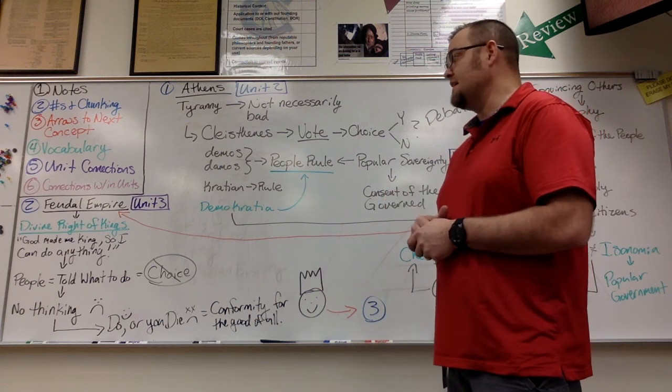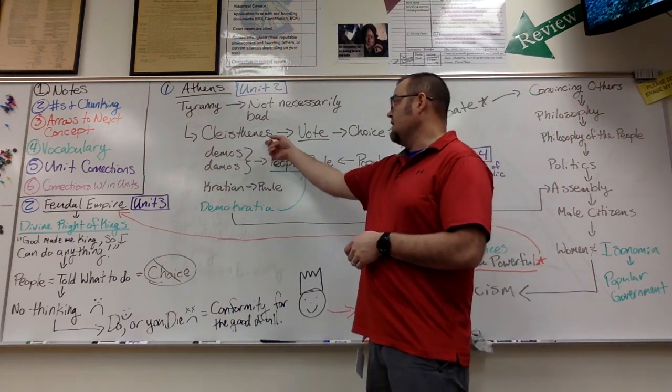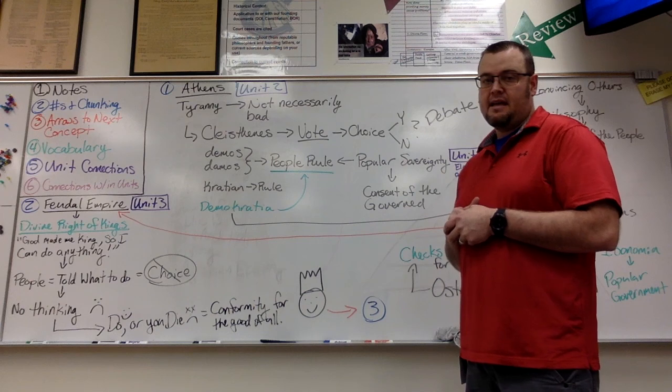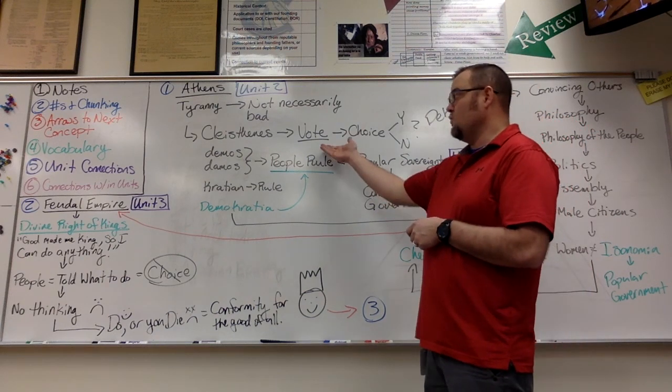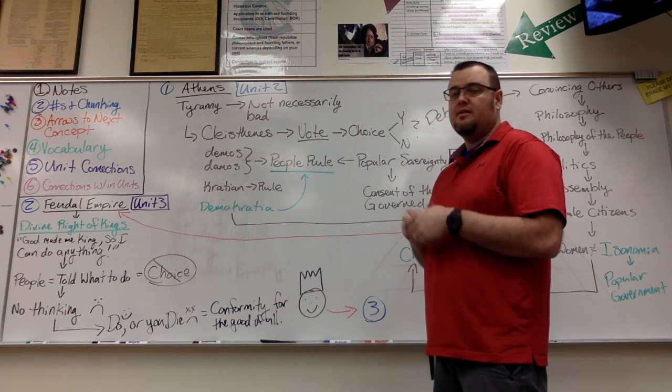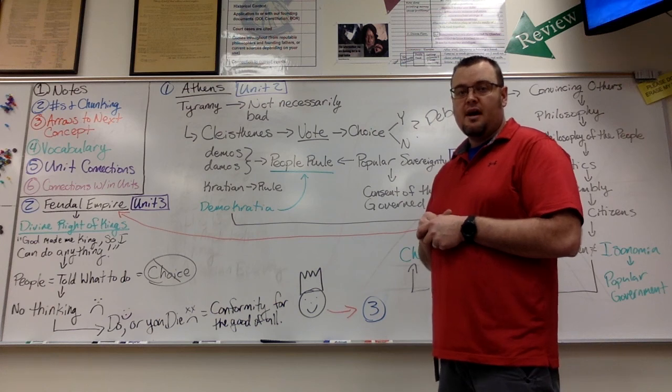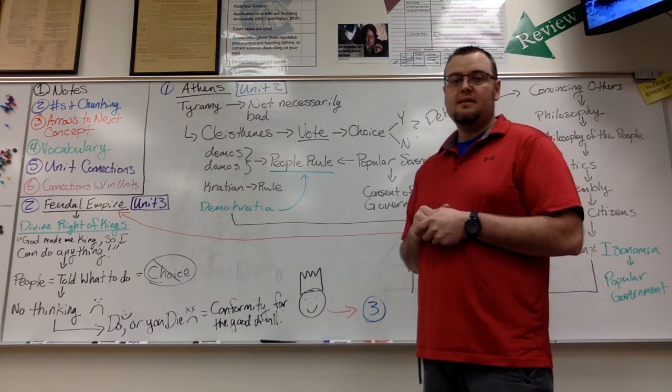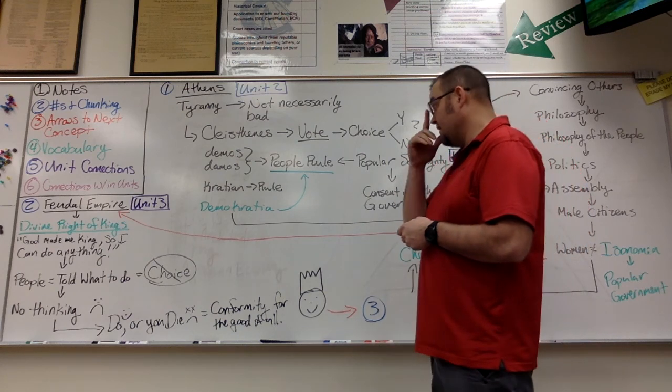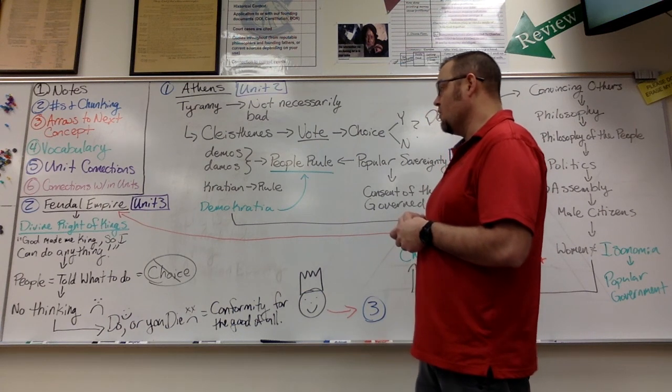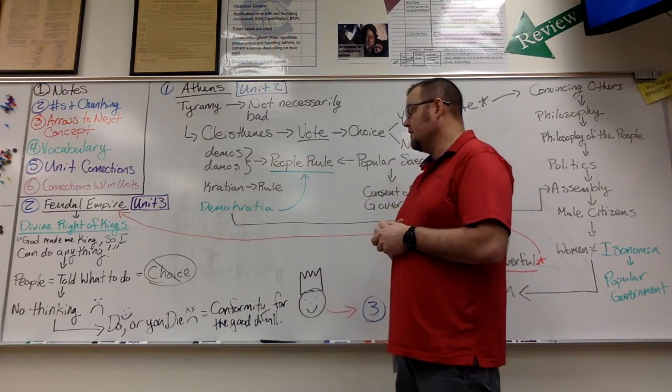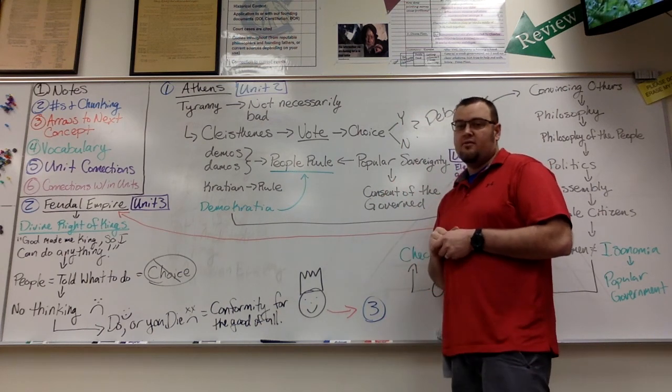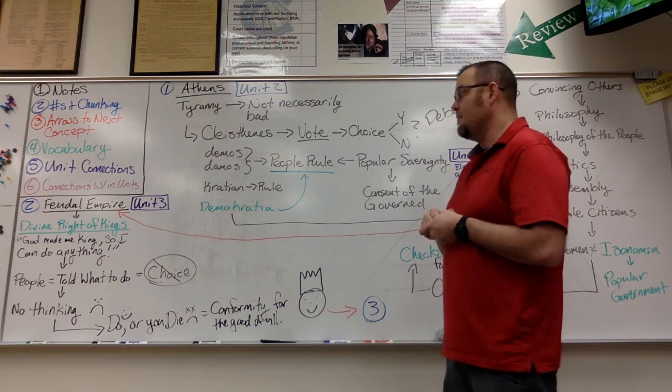The person we really want to pay attention to here is Cleisthenes. Cleisthenes was a very important political philosopher within Athens, and he came up with the idea that we really should vote about the various things that happen in our political world. Political, in fact, is derived from the word polis or city-state that we get from Greek. The other thing we get from Cleisthenes is this idea of democracy or demokratia, which means people rule.